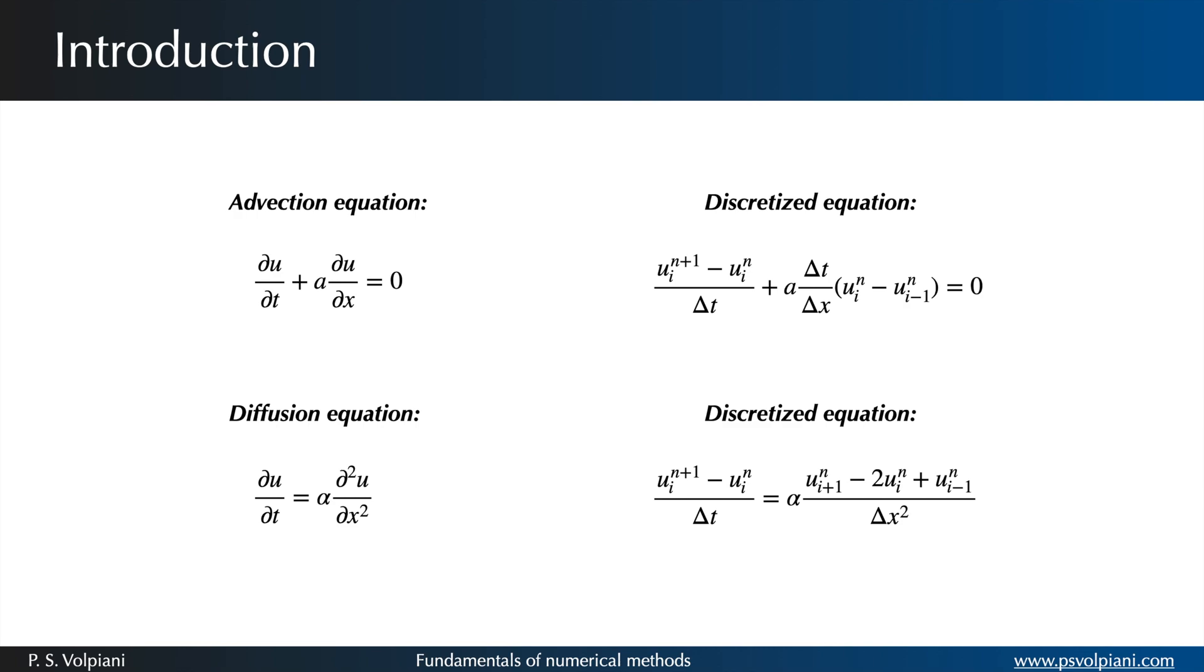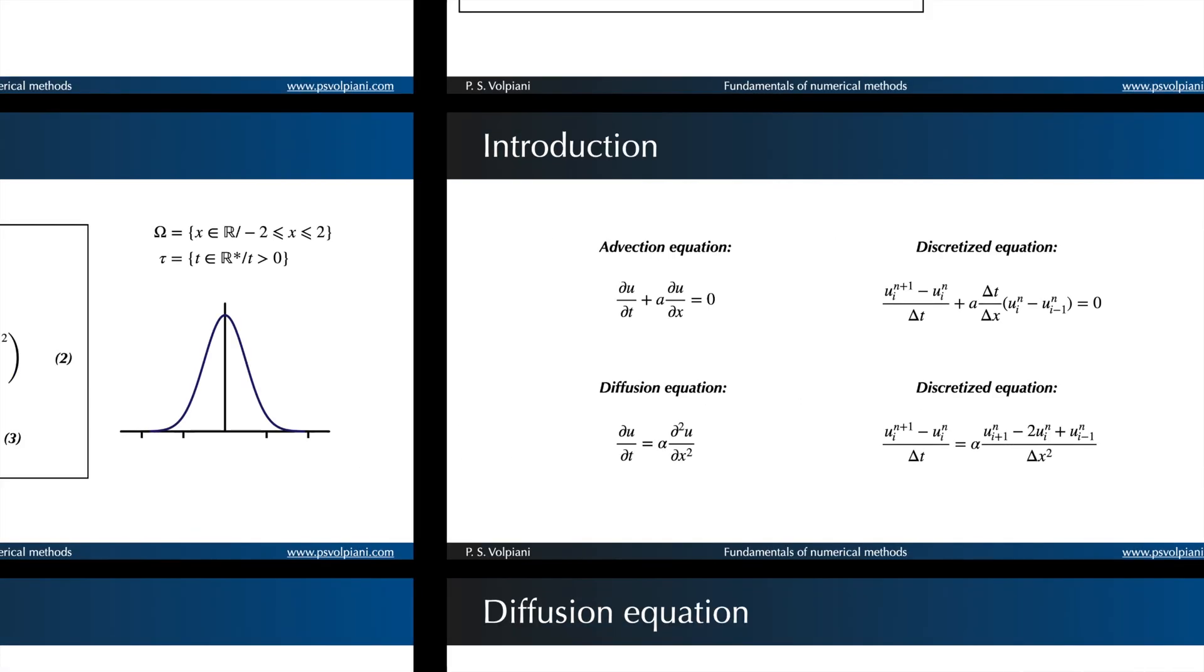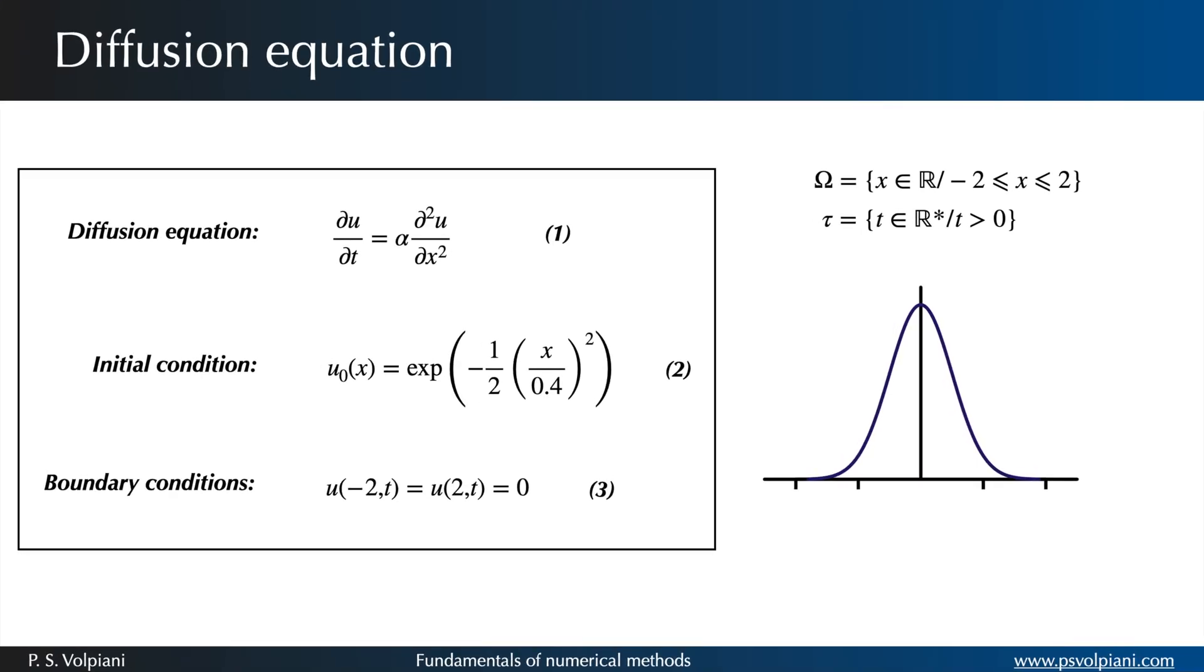In the case of the heat equation, alpha is the thermal diffusivity of the medium. For simplicity, let's use the same initial condition as in our previous exercise, a Gaussian function normalized by its value in x equals 0.